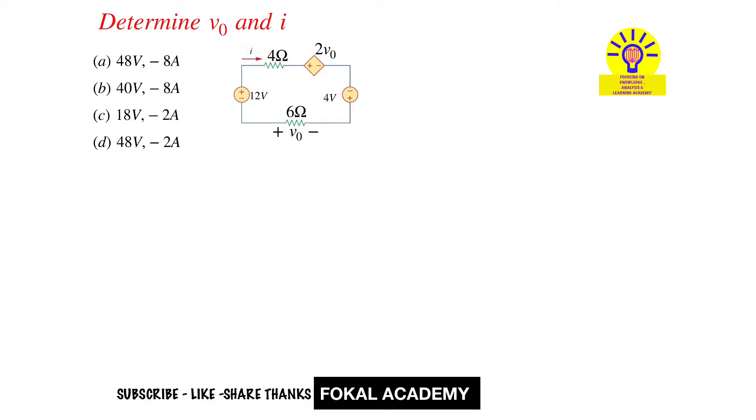First of all apply the KVL loop, then we get minus 12 plus 4i plus 2v0 minus 4 plus 6i equal to zero. So let's consider this is equation one.